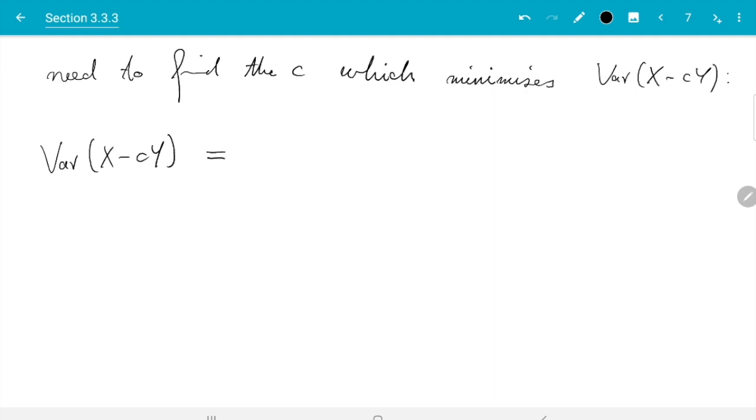Variance of x minus c y. You'll probably remember the trick. Variance can be written as covariance of the variable with itself. So I can do covariance x minus c y, x minus c y.